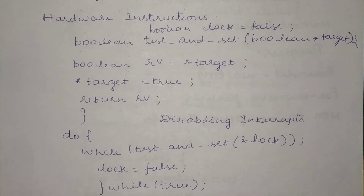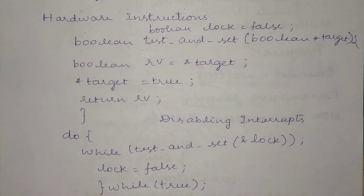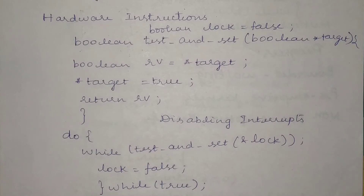If you are working in a multiprocessor environment, it is highly difficult to disable the interrupt as we did in the uniprocessor case. It takes much more time and will delay the current execution of the process. Even in multiprocessor or real-time systems, this delay affects system efficiency — the process will not receive its output in time. So disabling interrupts is not a feasible solution in a multiprocessing environment.